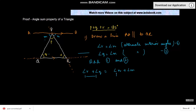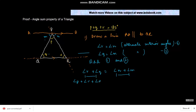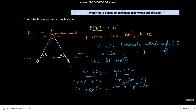We already have angle Q and angle R. Now we add angle P to both sides. So angle P plus angle R plus angle Q is equal to angle N plus angle M plus angle P. Rearranging, angle P plus angle Q plus angle R is equal to angle M plus angle P plus angle N.